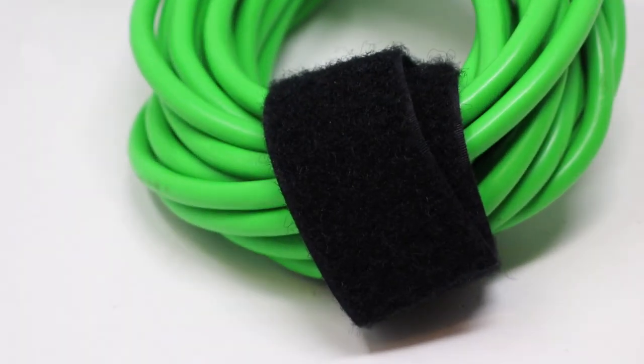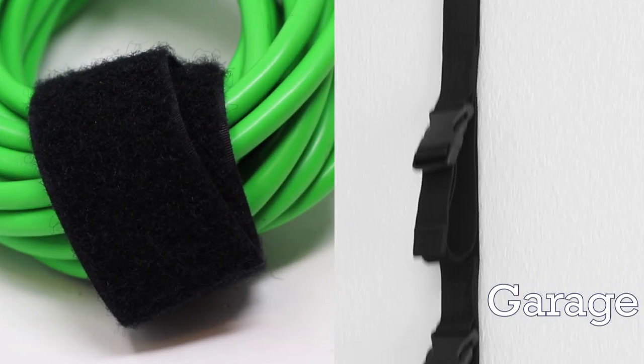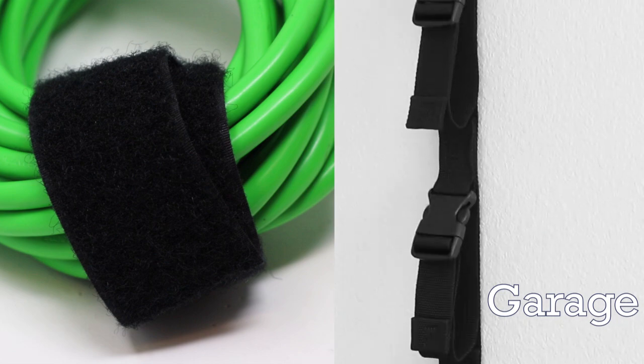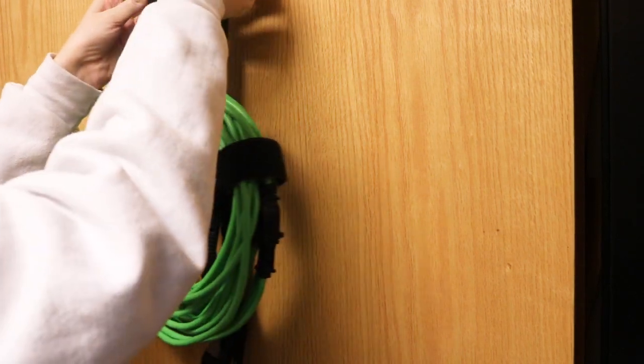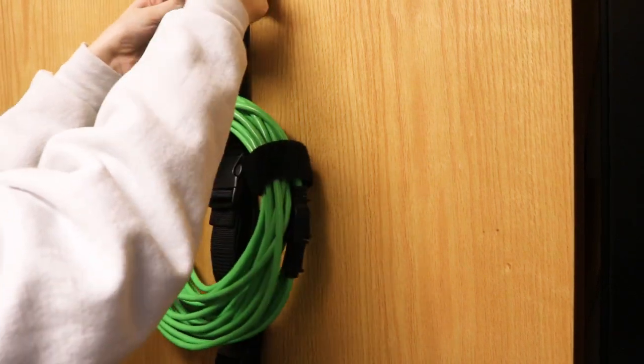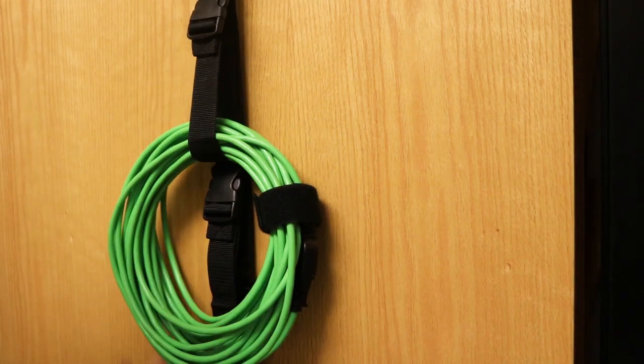Tidy Tite strips can also be used in conjunction with our product Tidy Tite Garage. Wrap your cords, hoses, or Christmas lights with a Tidy Tite strip before hanging on the Tidy Tite garage, keeping your item even more secure, tidy, and tight.